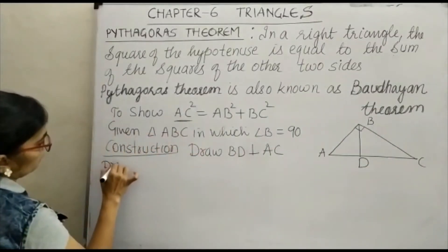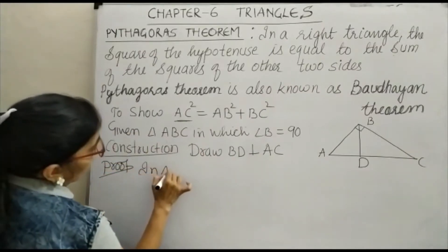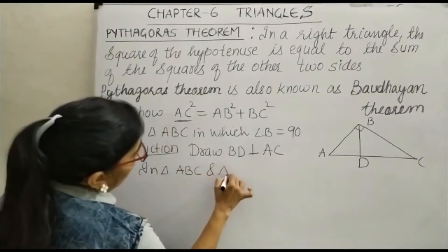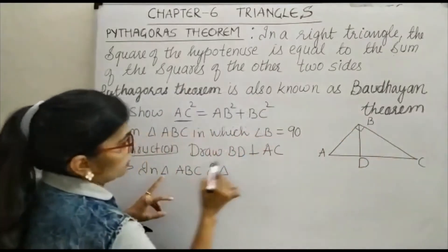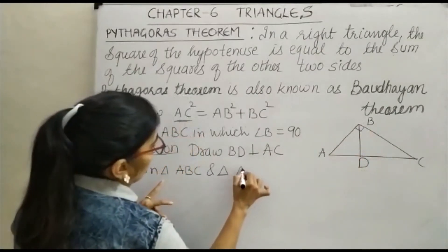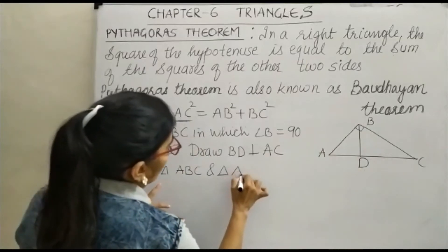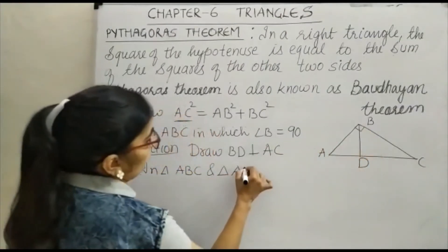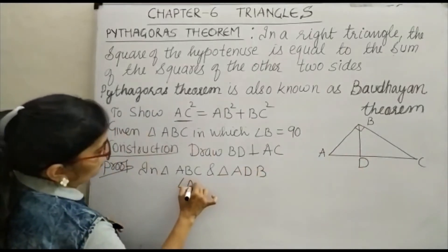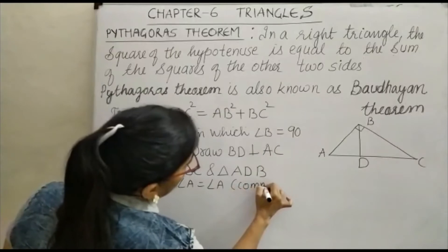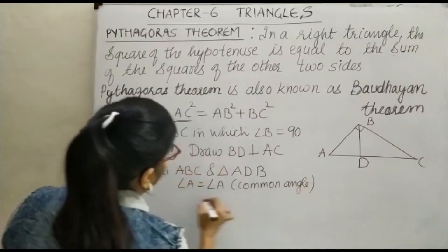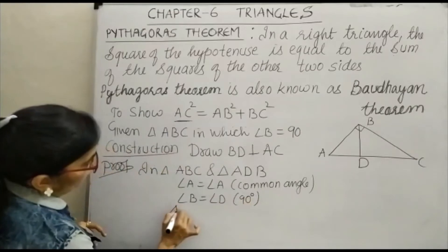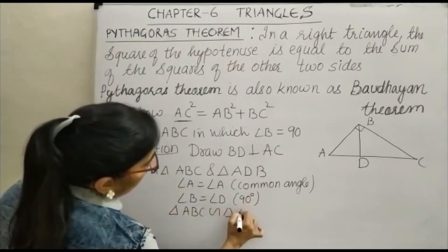Now let us see the proof. In triangle ABC and triangle ADB: in the big triangle, angle B is 90 degrees, and in triangle ADB, angle D is 90 degrees. Angle A is equal to angle A — this is your common angle. And angle B is equal to angle D, both 90 degrees. Therefore, triangle ABC is similar to triangle ADB.